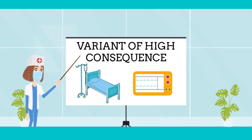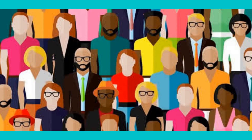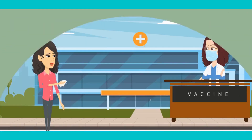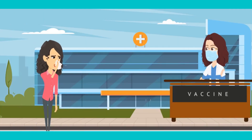A variant of high consequence has clear evidence that preventive measures or medical countermeasures have significantly reduced effectiveness relative to previously circulating variants. Some variants are faster spreading and start to weaken or evade both natural and vaccine-derived immunity.